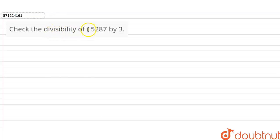To check the divisibility by 3, we have to check if sum of digits of a number is divisible by 3. If the sum of digits is divisible by 3, the number is also divisible by 3. So sum of digits will be equal to 1 plus 5 plus 2 plus 8 plus 7.